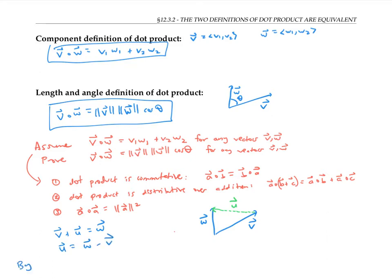Now, by the law of cosines, we know that the length of u squared is equal to the length of v squared, plus the length of w squared, minus two times the length of v, times the length of w, times cosine of theta, where theta is the angle of the triangle opposite vector u. So that's the angle here between v and w.